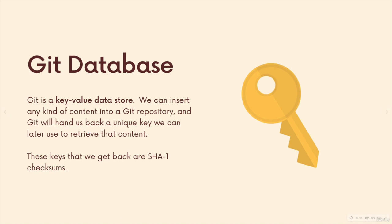I want to start by explaining something about Git. Git is a key-value data store, meaning that we can put data into Git. We ask Git to store something for us — that could be a file, it could be a folder, or it could be 100 files and folders. We could even just tell Git to store a piece of text for us, and I'm about to show you we can just give Git a piece of text and have it store that as well. So we can put all sorts of content into a Git repo.